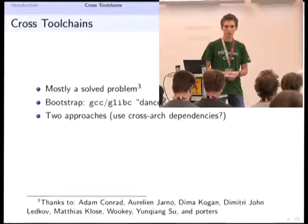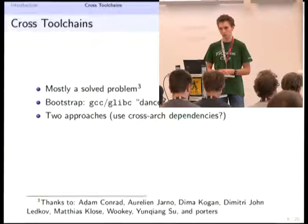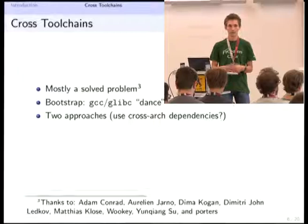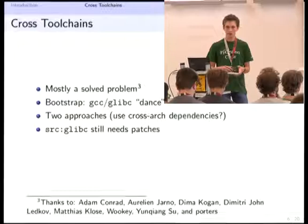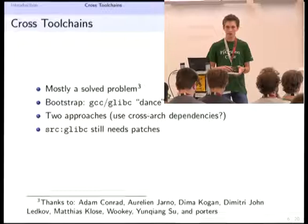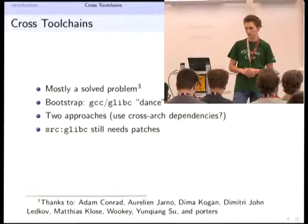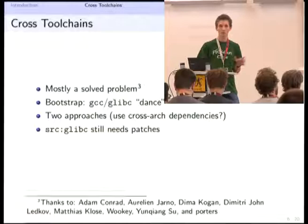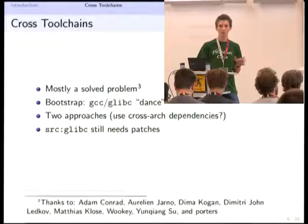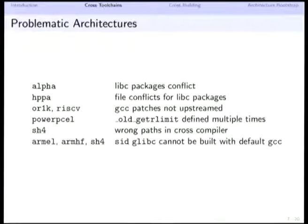There are currently two approaches to producing cross-compilers, differing in whether to use cross-architecture dependencies, which are not really supported by the archive currently. From my perspective, both approaches work. A few glibc patches still need upstreaming — work in progress. So if you try to do this at home, you need patches either out of cross-toolchain-base or out of the bug tracking system. For most architectures this works; if you see your pet architecture on the problematic slide, get in contact with me.